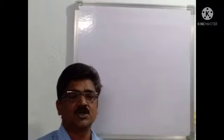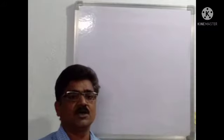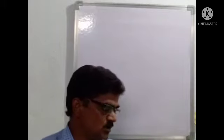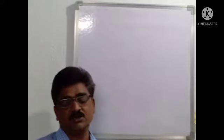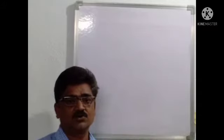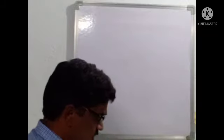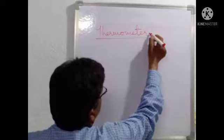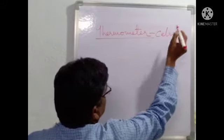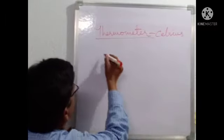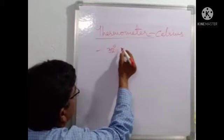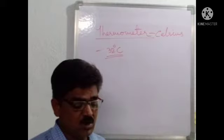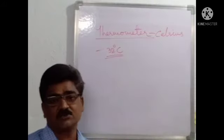Welcome to DBR Digital Classes. In the last two videos I told you about the energy from the sun for 8th class — how the energy rays are formed in different ways, how the energy is received from the sun to earth, and how it is reflected back to the atmosphere, clouds, and various places. Today we are going to discuss how temperature can be measured with the thermometer.